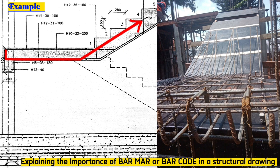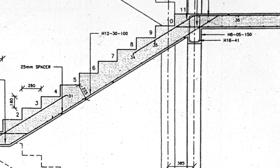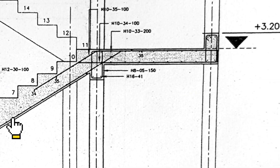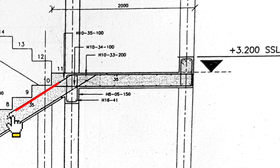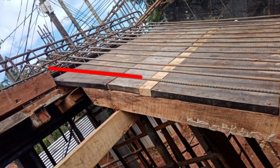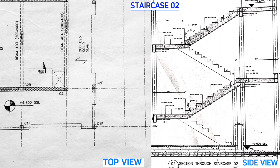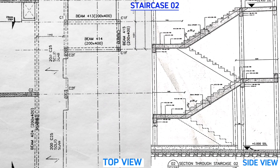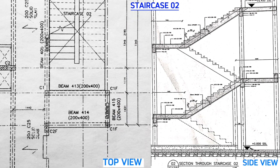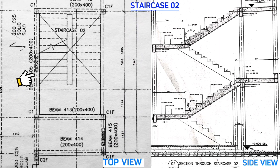Similarly, on ground, they will start from here with their hooks facing up, up to here. These steel bars of Cod 34 will go up to this landing here and become the top bars for the next landing. This is staircase 02 for block B and this is beam 405 here.